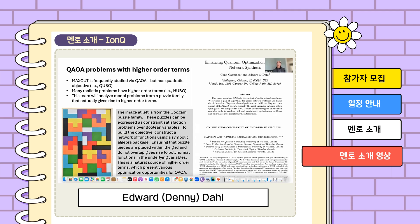Realistic problems very often can have higher order terms. So instead of building a QAOA for quadratic unconstrained binary optimization, you may end up with a HUBO — higher order unconstrained binary optimization.